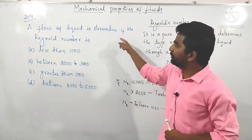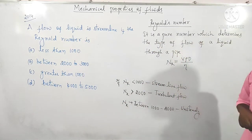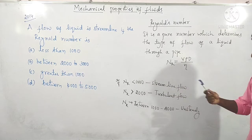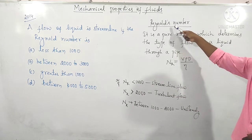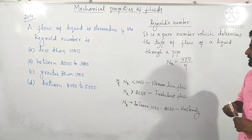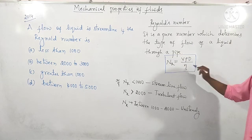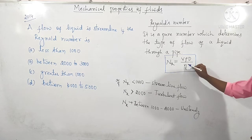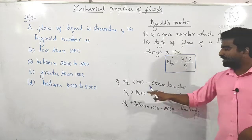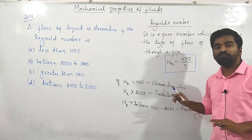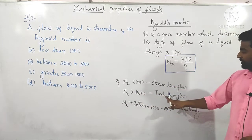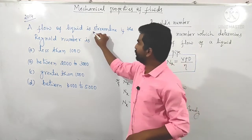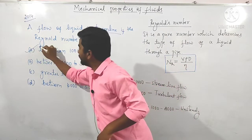The question asked in 2014: a flow of liquid is streamlined if the Reynolds number is what? The Reynolds number is a pure number which determines the type of flow of liquid through a pipe. It is given by Re = v rho d divided by eta, where v is velocity, rho is density of fluid, d is diameter of the pipe, and eta is the coefficient of viscosity. If Reynolds number is less than 1000, the flow is streamlined. If greater than 2000, it is turbulent. If between 1000 and 2000, it is unsteady. The answer is option A: less than 1000.